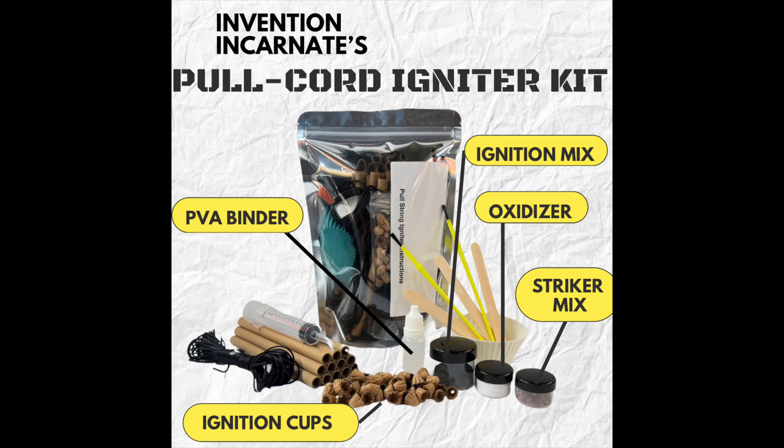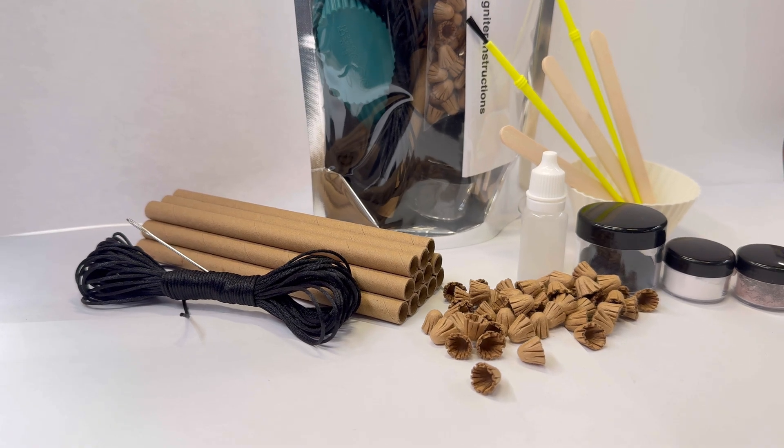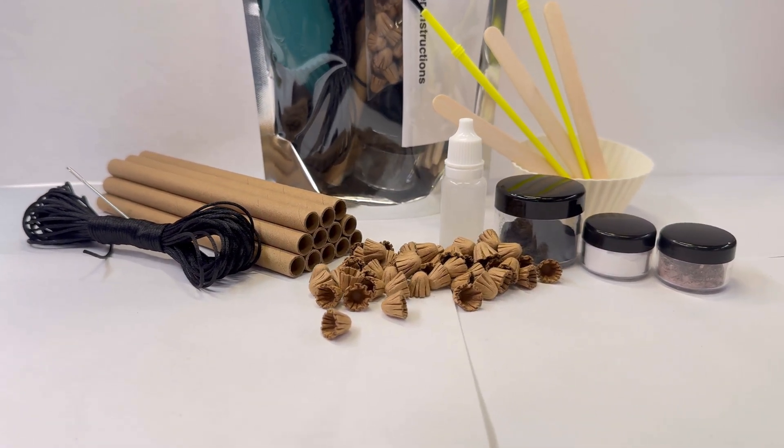This is an updated video version of the instructions for the Invention Incarnate Pull String Igniter Kit, available at inventionincarnate.com. A printed copy of these instructions is included in my kits in the event of a grid-down scenario or radical censorship.